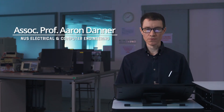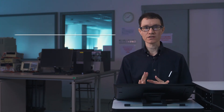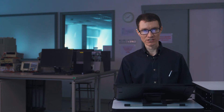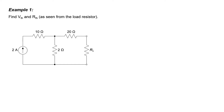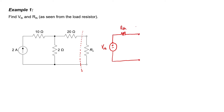Let's look at a few examples where we need to find the Thevenin equivalent source and the Thevenin equivalent resistance. Typically we want to know how a large collection of circuit elements is seen by one particular circuit element. What we're really saying is that we want to simplify everything to the left of the dotted line and replace it with a single source and a single resistance.